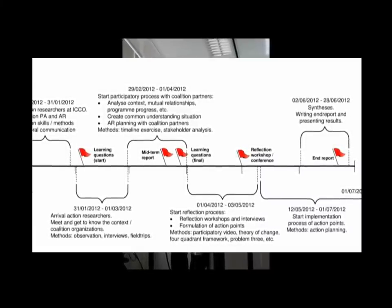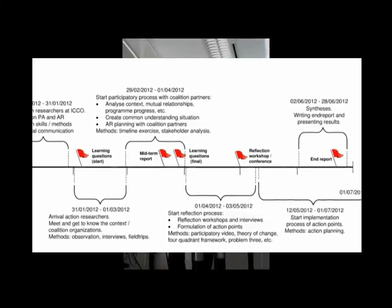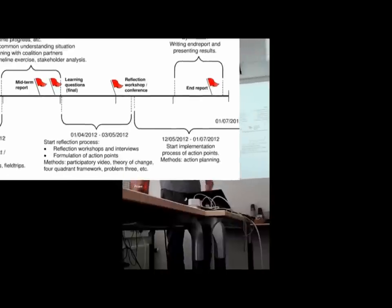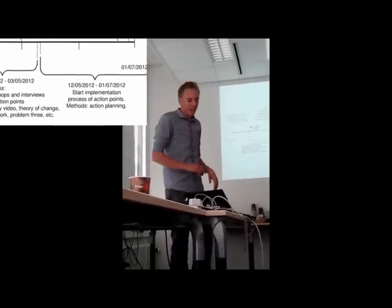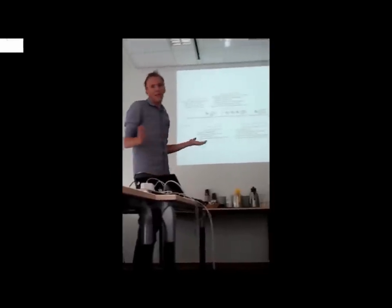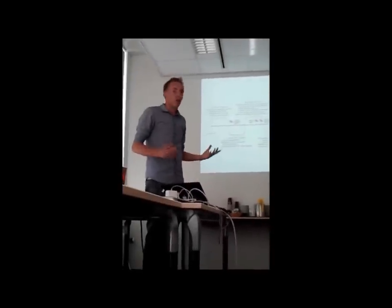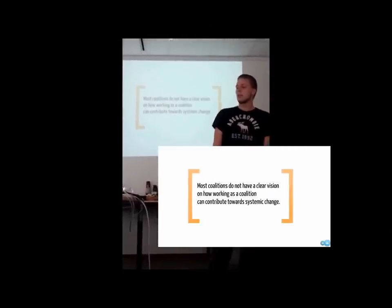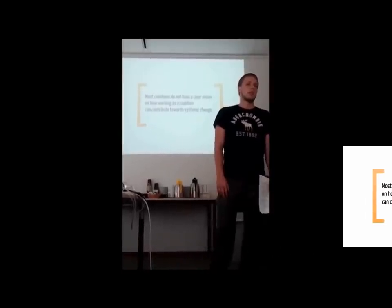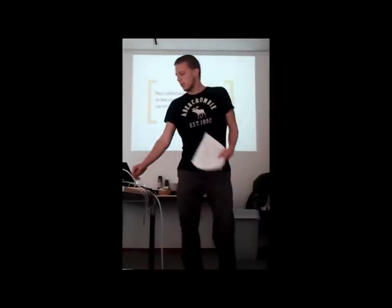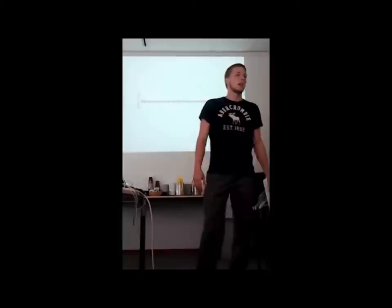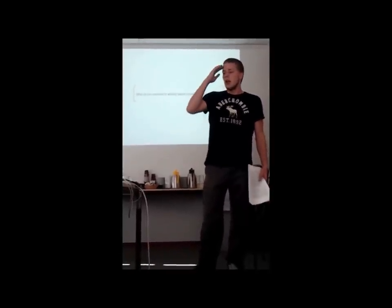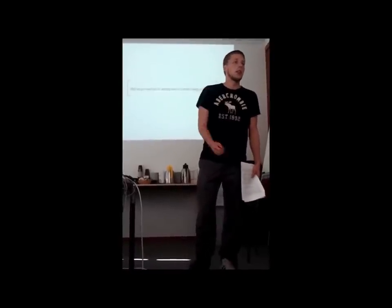This is a process that started but also continues into next year, and it's a cycle because with the action points and implementation there's new action which should be reflected. Working as a coalition can contribute towards systemic change — this is a statement and we have a question for you. What is, in your experience, a precondition — or what are the preconditions — for working towards systemic change as a coalition?